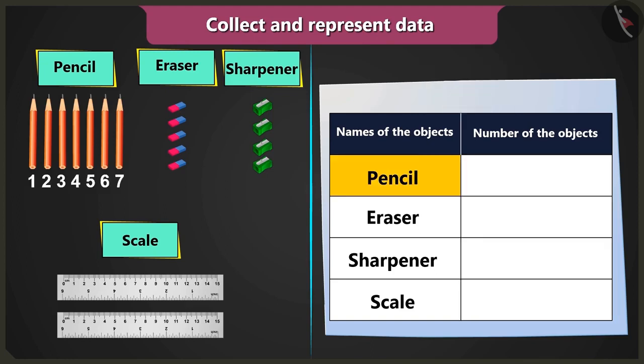Okay, you have seven pencils. So, you have to draw seven triangles in the column count of objects. I have five erasers, so I have to draw five triangles.